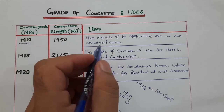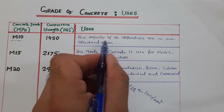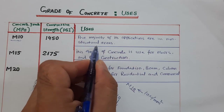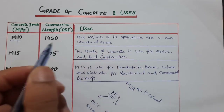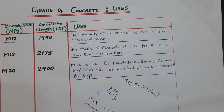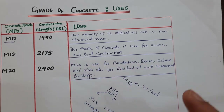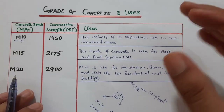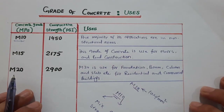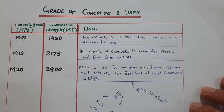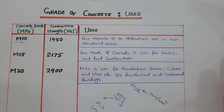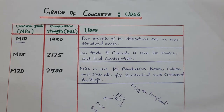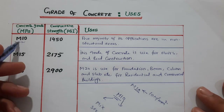The majority of M10's applications are in non-structural areas. It is not used for foundations, beams, columns, or slabs. Normally you can use M10 to make a plain surface of any area — general non-structural concrete work.